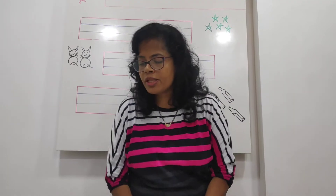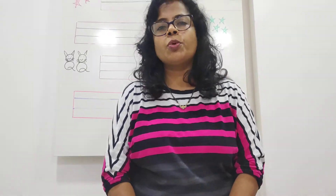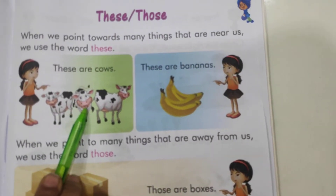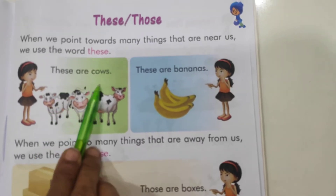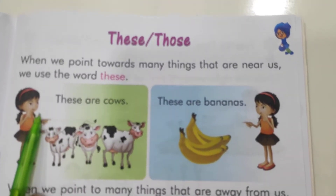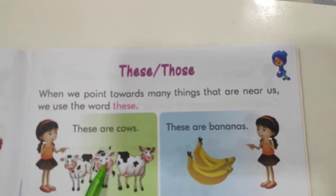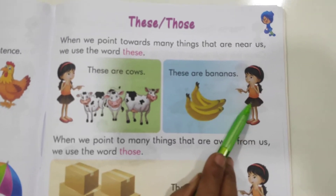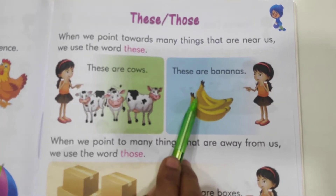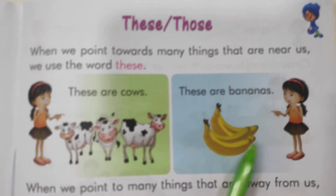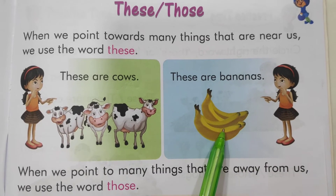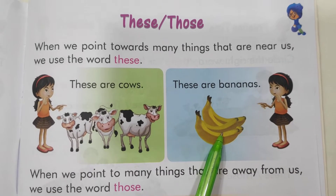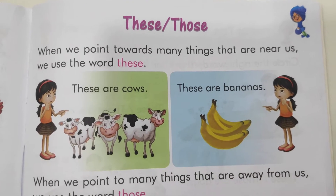Everyone open page number 75 of your literacy skill sheet. What is this children? These are cows — because here there is more than one cow that is close to the girl. That is why she is pointing at the cows and says 'these are cows.' Now these are bananas, because the bananas are close to her.